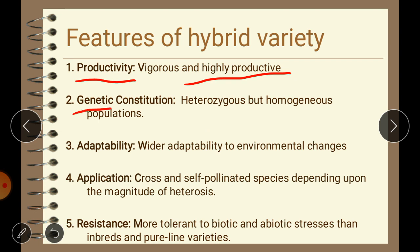The second feature is genetic constitution. All the individuals or plants of a hybrid variety are genetically similar, meaning they are homogeneous. While the hybrid varieties are heterozygous at the zygotic level, they are highly uniform and more attractive because of their homogeneous nature. The third feature is adaptability — hybrid varieties have wider adaptability to environmental changes than inbred and pure lines due to high inherent buffering capacity and gene combinations from two different parents.